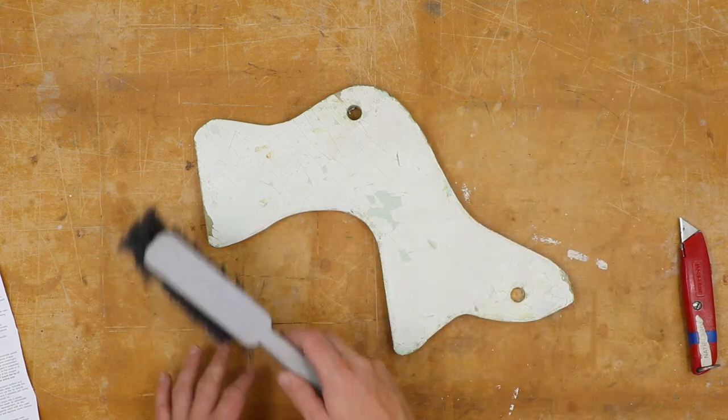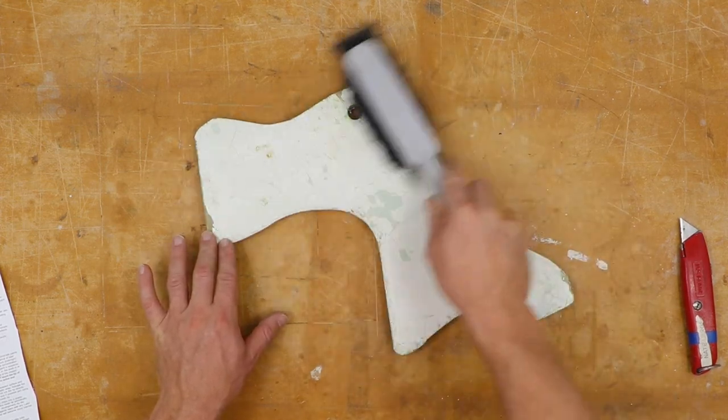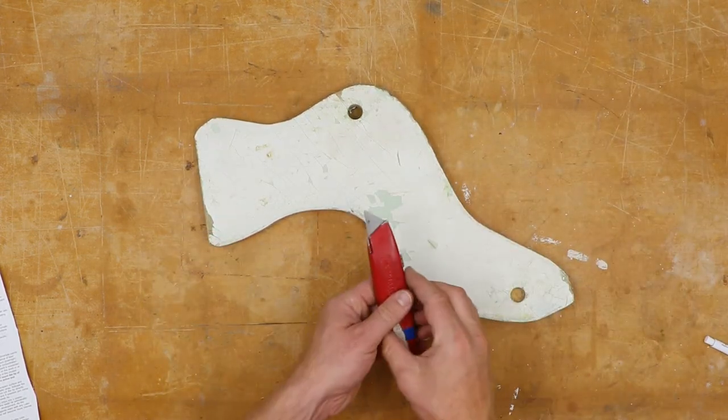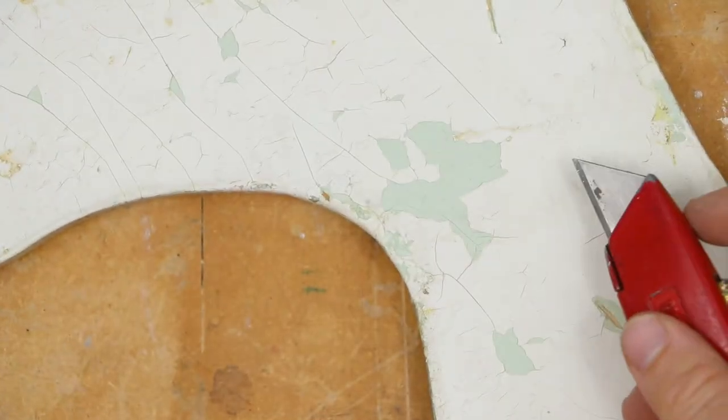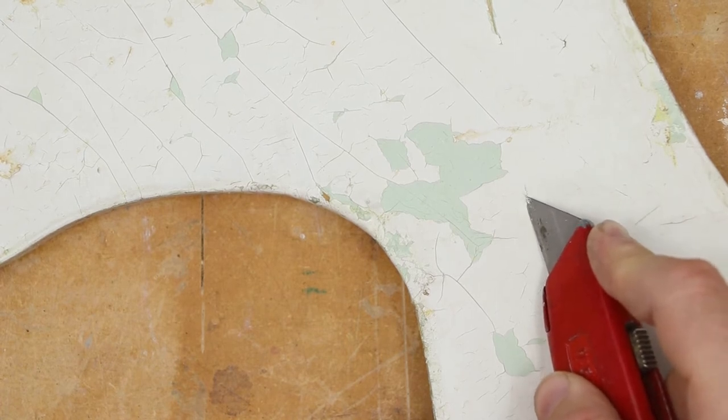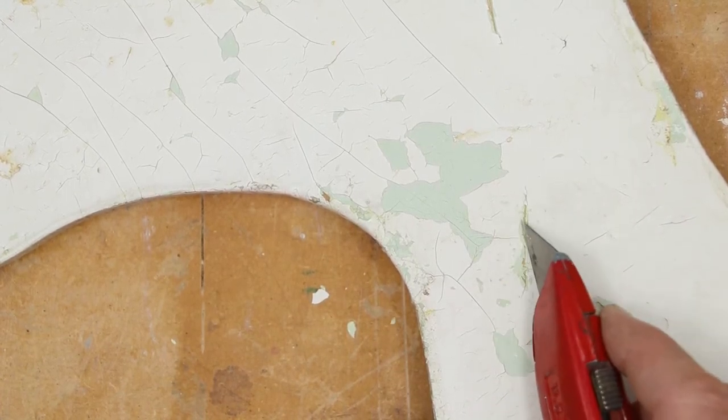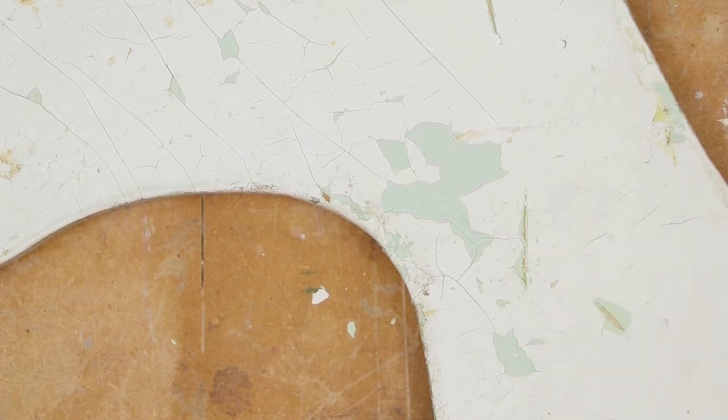So the first thing I need to do is take any dust that's settled on it and knock it off. Next, I need to take my razor blade and cut a V-shaped groove through all the layers of paint to expose all the different layers. So I can see the bare wood down there.